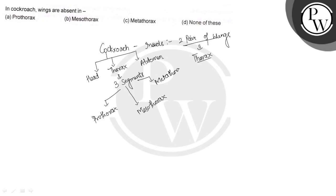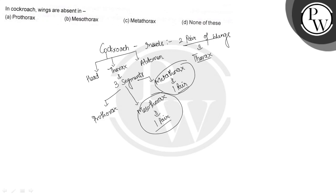From the mesothorax arises one pair of wings, known as the mesothoracic wings. From the metathorax arises one pair of wings, known as the metathoracic wings. So there are two pairs of wings in the cockroach in total.